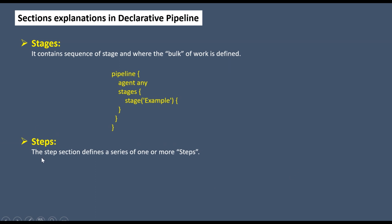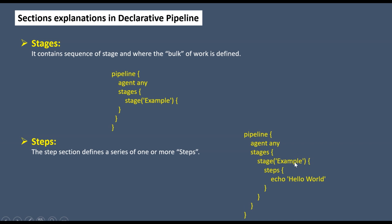The 'steps' section defines a series of one or more steps. In the example structure, you have: pipeline with open-close curly braces, then agent, then stages, then stage with a name like 'example', and under the stage you define steps. The first step in this example echoes 'hello world'.